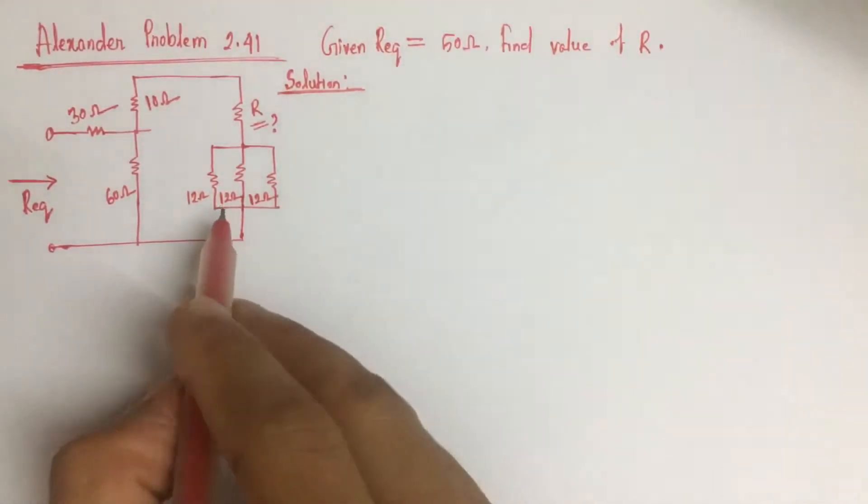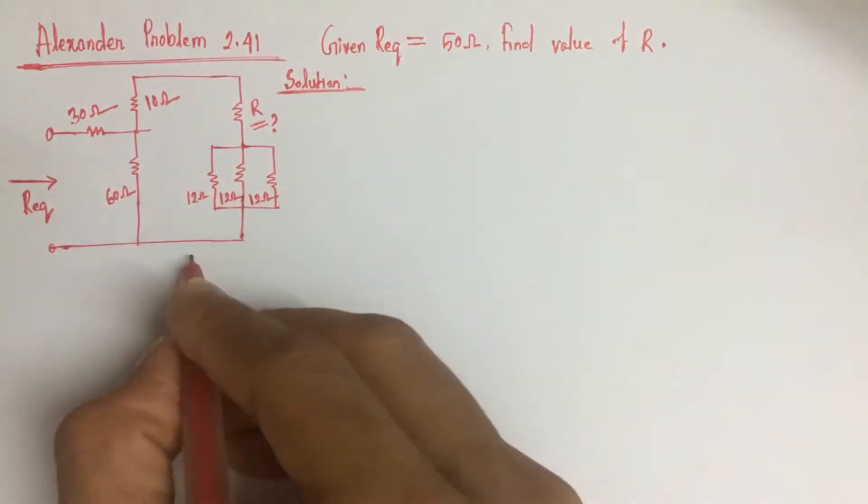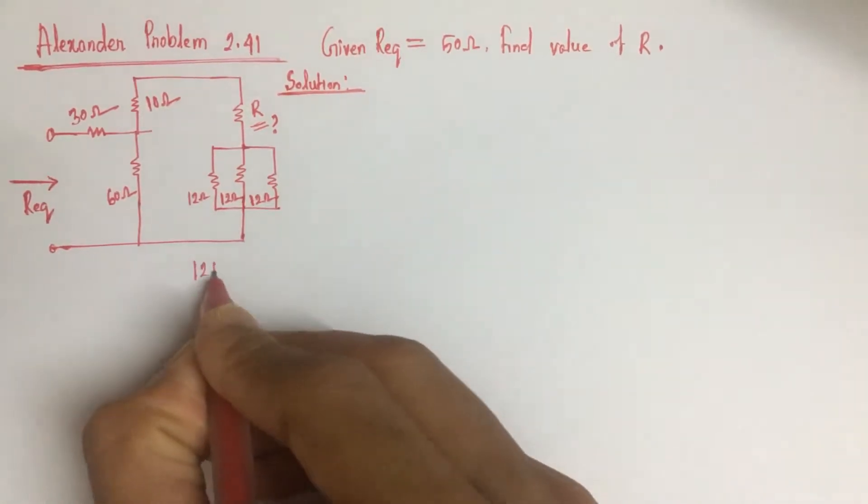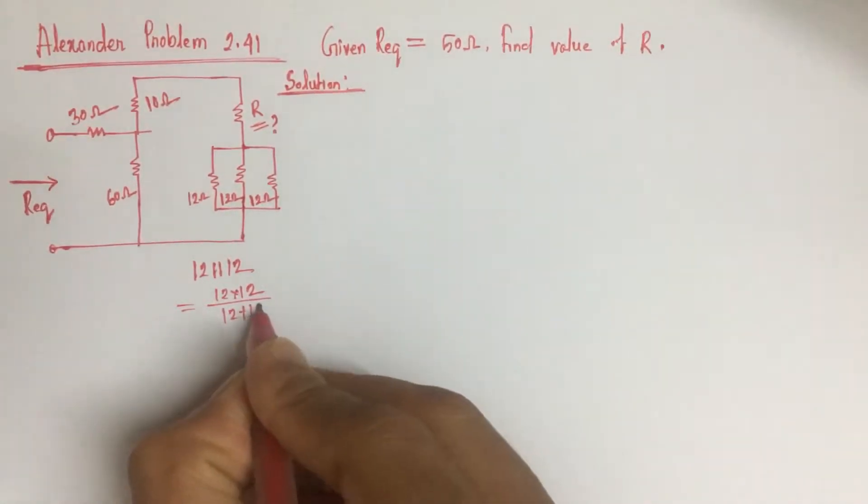Now we see that here 12 ohm, 12 ohm and this 12 ohm resistance R in parallel. If we combine these three 12 ohm resistances, we will have two 12 ohm resistances in parallel which can be replaced by a resistance of 6 ohm.